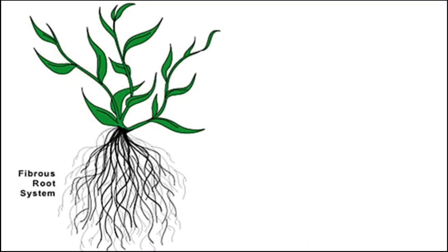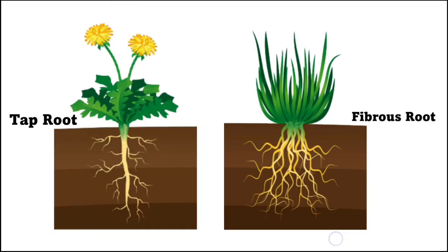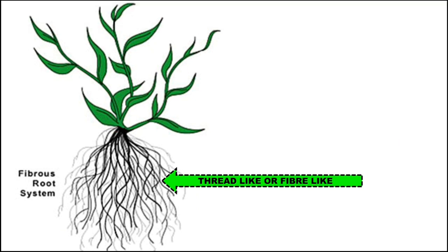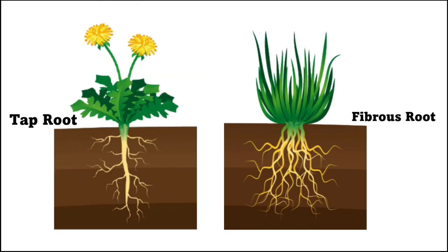The second type of roots are fibrous roots. Thread-like or fiber-like roots that arise from the stem are called fibrous roots. So this is a fibrous root system. There are two main types of roots: one is the tap root and another is the fibrous root.